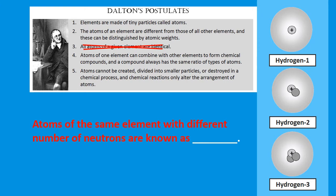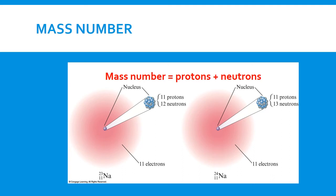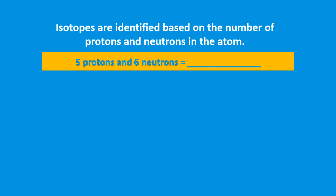Atoms of the same element with different numbers of neutrons and different mass numbers are called isotopes. The mass number is equal to protons plus neutrons. Sodium has isotopes with mass numbers of 23 and 24. The number of protons gives the identity of the element — sodium has 11 protons. Adding 12 neutrons and 11 protons gives sodium-23; adding 13 neutrons and 11 protons gives sodium-24.